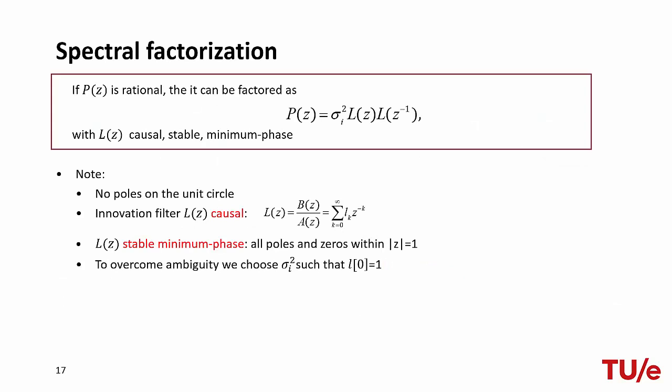More formally, the spectral factorization theorem states that if the power spectral density of a random signal is rational, then it can be factored as the product of the input noise variance by L(z) by L(z^(-1)), where L(z) is the innovation filter. This filter is causal, stable, and minimum phase, meaning that all poles and zeros are within the unit circle.